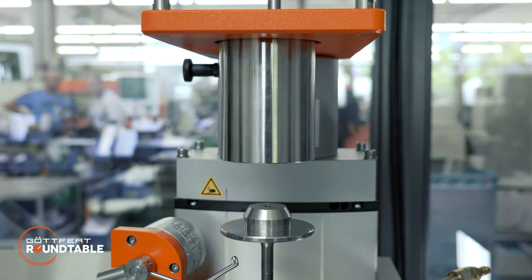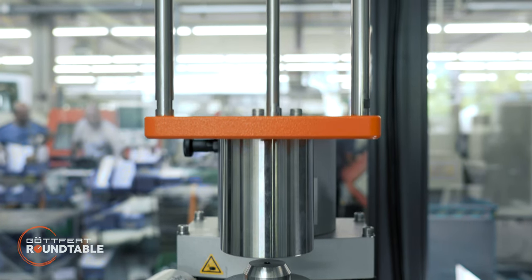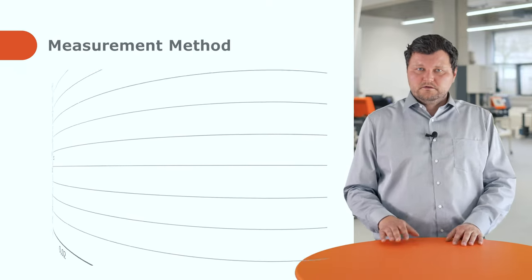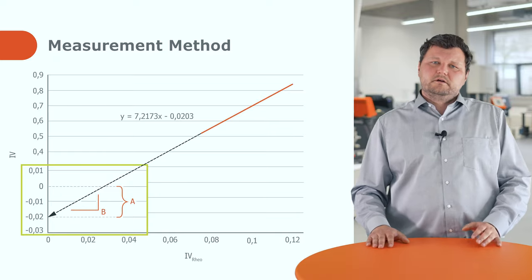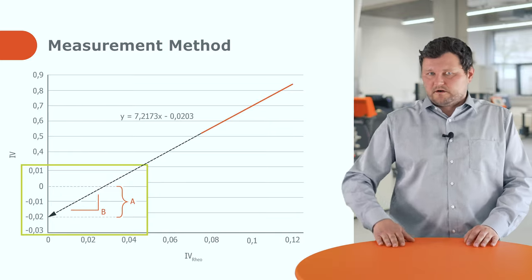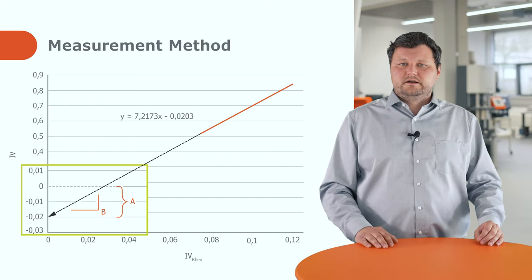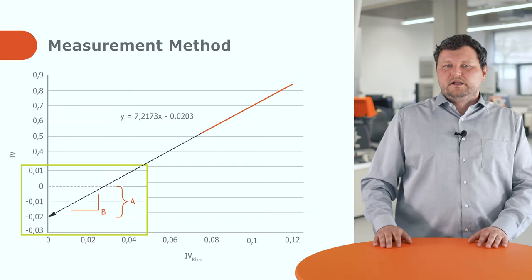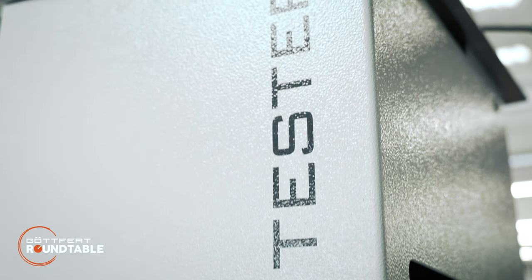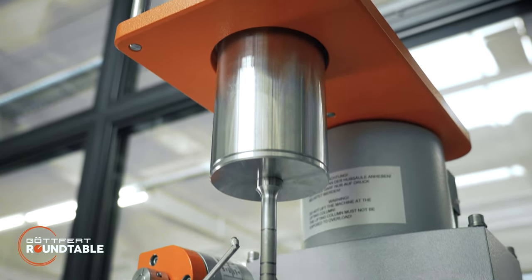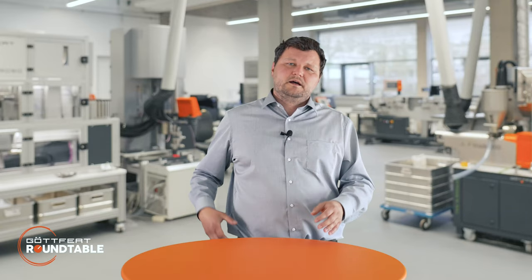One more thing to mention is that we do not directly measure the IV, but we measure a shear viscosity and then translate the result to an IV using a correlation. For that, we can use either our standard correlation or you can also build a custom correlation for your material specifically. The big advantage of our IV tester is that the determination of the correlation is directly implemented in the user interface. To build a custom correlation, you need at least five representative samples with standard IV results, run them on the IV tester, and after that you have your correlation, which you can store and use for the future. Sometimes our standard correlation also just works fine — it makes sense to first verify that, but then it's even simpler to use.